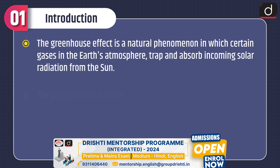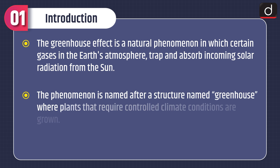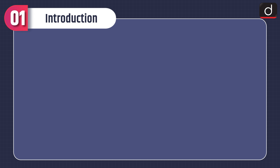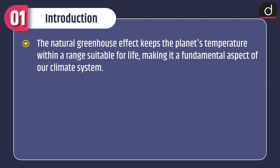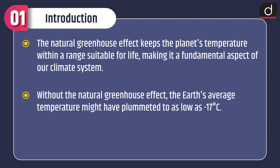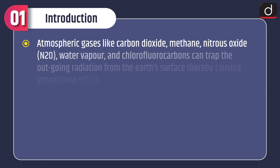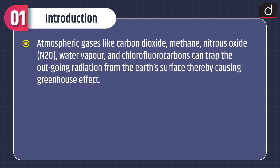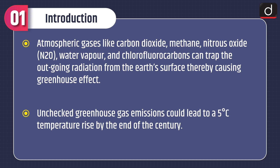The Greenhouse Effect is a natural phenomenon in which certain gases in the Earth's atmosphere trap and absorb incoming solar radiation from the Sun. The phenomenon is named after a structure called a Greenhouse, where plants requiring controlled climate conditions are grown. The natural greenhouse effect keeps the planet's temperature within a range suitable for life. Without it, the Earth's average temperature might plummet to as low as minus 17 degrees Celsius. Atmospheric gases like carbon dioxide, methane, nitrous oxide, water vapour, and chlorofluorocarbons can trap outgoing radiation from the Earth's surface, causing the greenhouse effect. Unchecked greenhouse gas emissions could lead to a 5 degrees Celsius temperature rise by the end of the century.